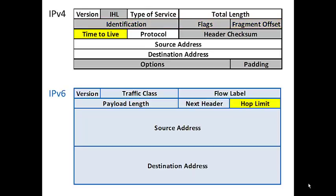Time to live and hop limit perform basically the same function — it's the number of routers a packet can visit before it expires. We don't want packets bouncing around indefinitely using bandwidth if they're lost or stuck in an infinite loop, so after 128 hops the packets are discarded when this count cycles down to zero. Protocol in IPv4 defines whether it's UDP or TCP, and this is basically the same as the next header field in IPv6, which as a default defines what type of data is in the packet.